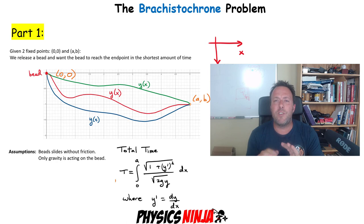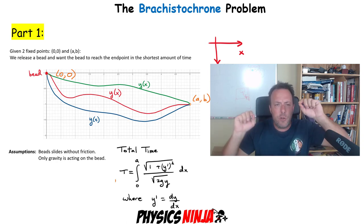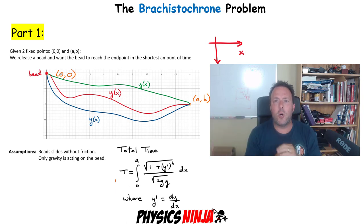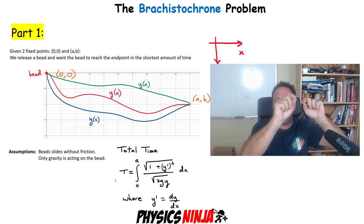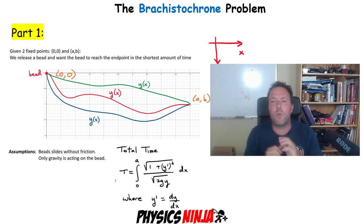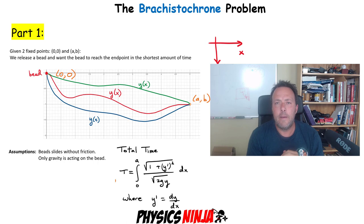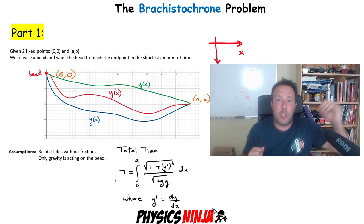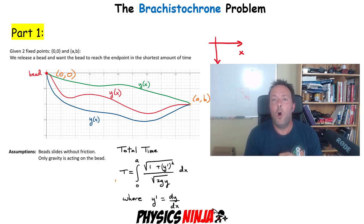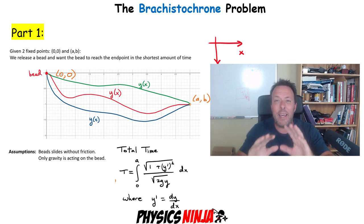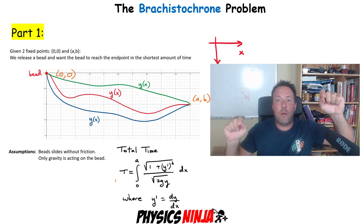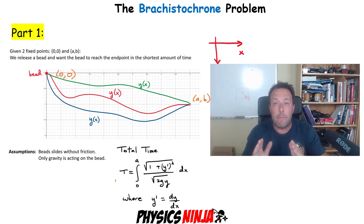I have three parts to this video. In the first part we're going to look at the brachistochrone problem. We basically have two fixed points and the goal is to create a shape. Imagine I gave you a wire that you can bend in any direction connecting both endpoints. I place a bead on that wire and only gravity acts to speed it up or slow it down. What is the shape of the wire that gets the bead from one point to the other in the shortest amount of time? That is the brachistochrone problem.